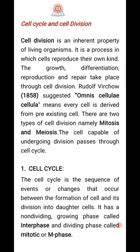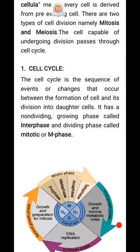The cell capable of undergoing division passes through the cell cycle. Now we see the cell cycle. What is the cell cycle? The cell cycle means the sequence of changes or events that occur between the formation of a cell and its division into daughter cells. That is the cell cycle.